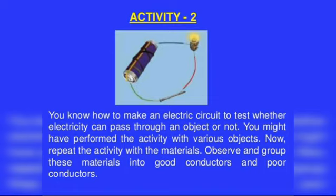Things made of metals produce a ringing sound when struck hard. Suppose you have two boxes similar in appearance — one made of wood and another made of metal. You can tell which box is metal by striking both. Metals produce ringing sounds; they are said to be sonorous. Materials other than metals are not sonorous.